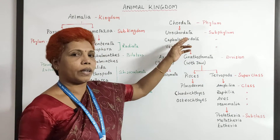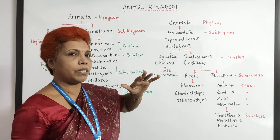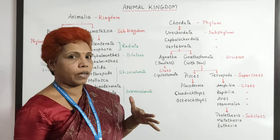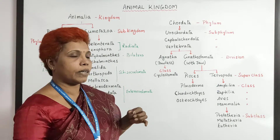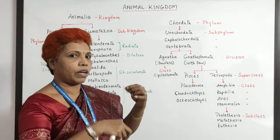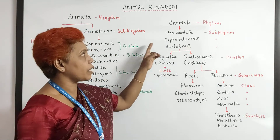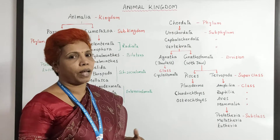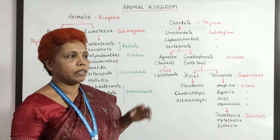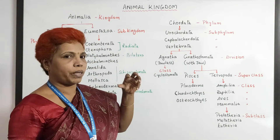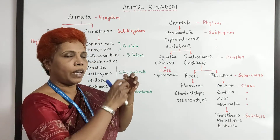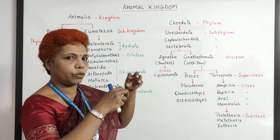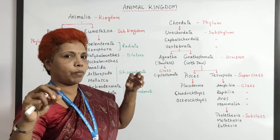In Urochordata, the animals are fixed and sessile, but their digestive tract has a U-shape structure. In Cephalochordata, the head is prominently seen and the notochord is continuous throughout the body.